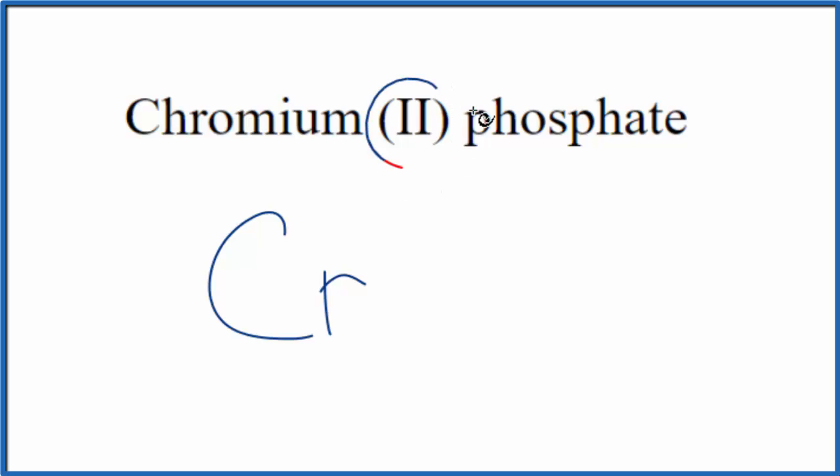And we know because of this 2, this is a transition metal, and it has a charge of 2+. For the phosphate, we see this A-T-E at the end.